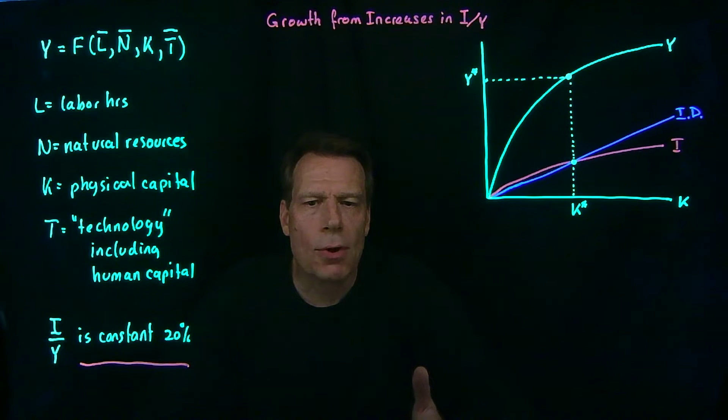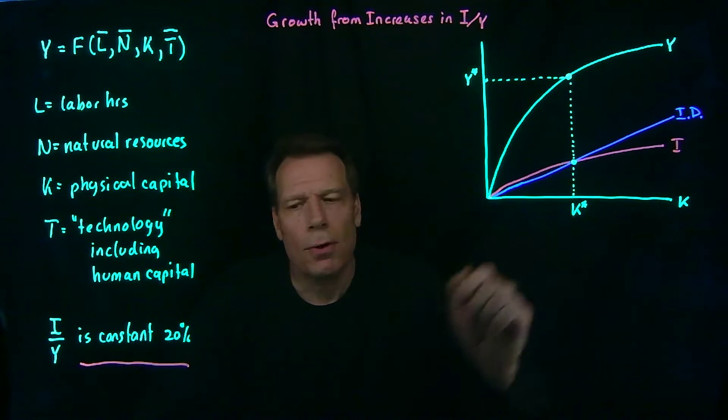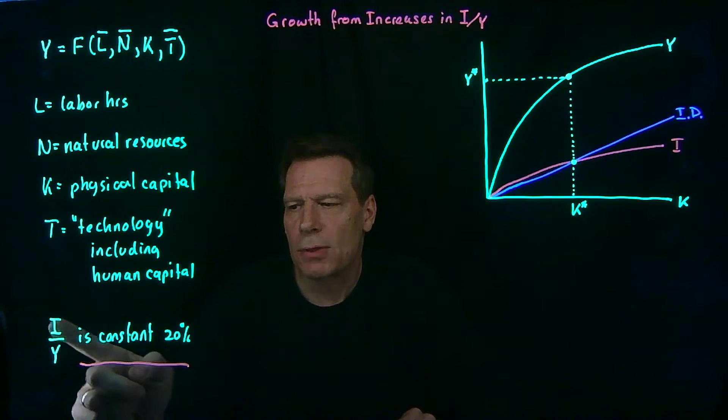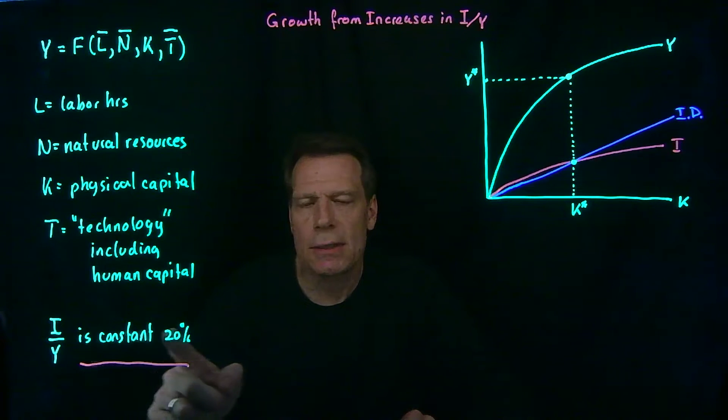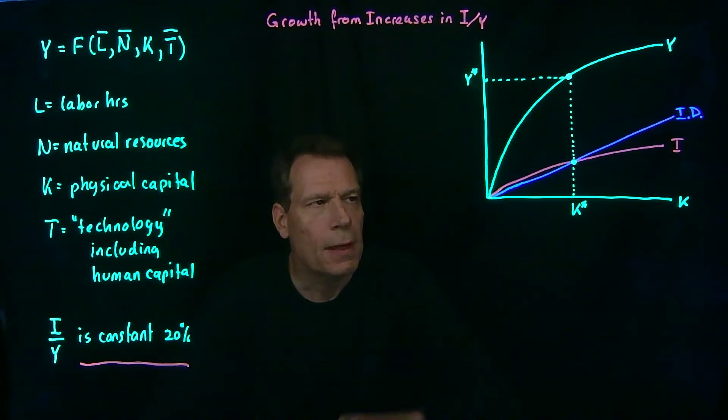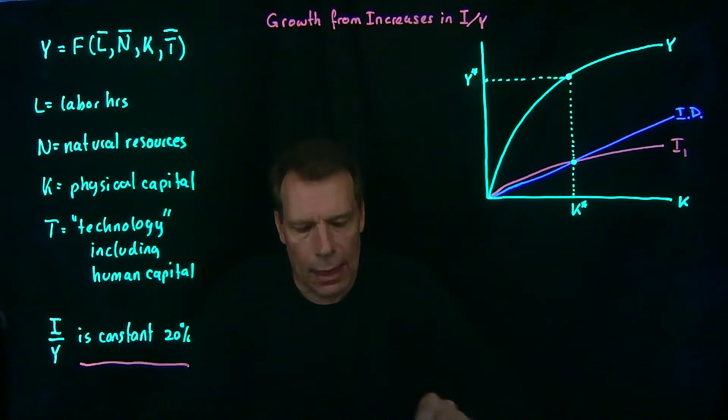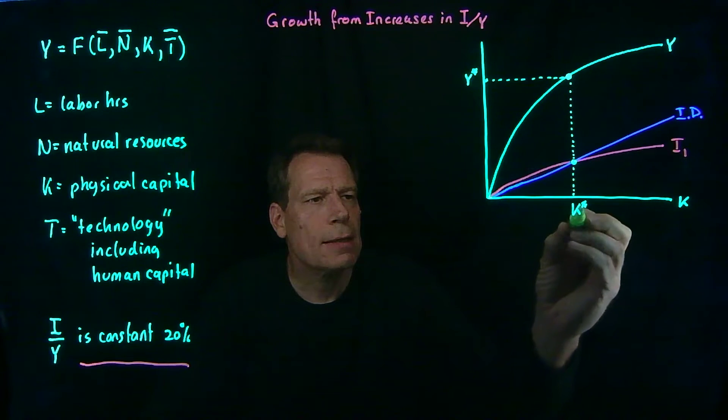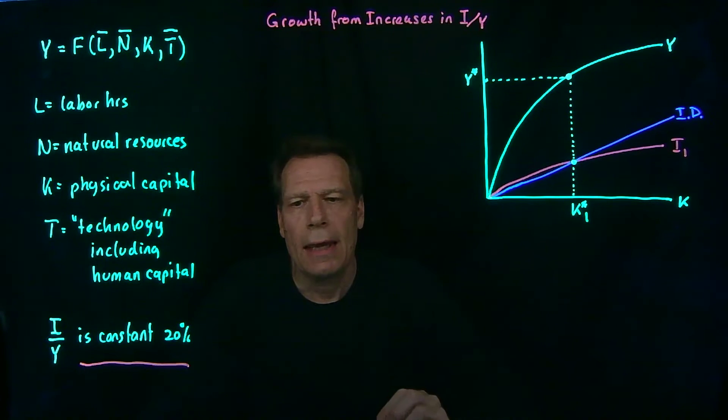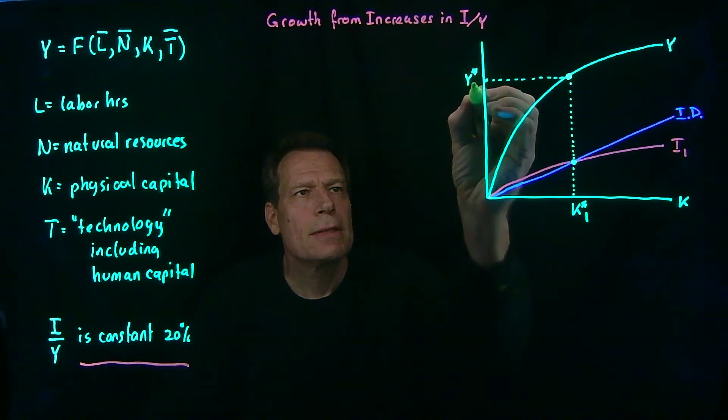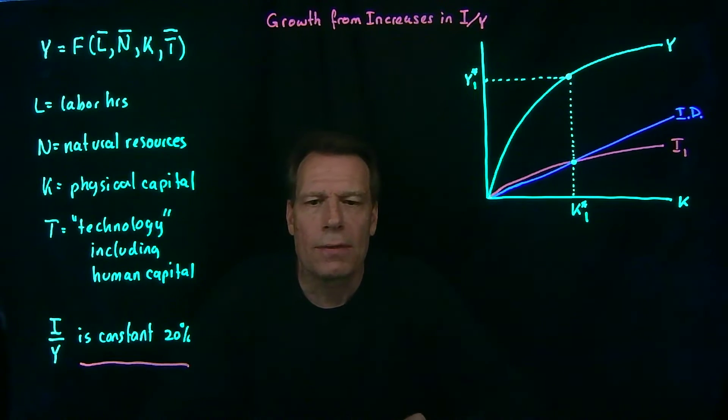Let's imagine that we start at the investment curve that we got from the assumption that the investment share of GDP is constant at 20%. That's our starting point, so we'll put a 1 next to that. And that results in the steady state level of capital and in the steady state level of natural GDP.